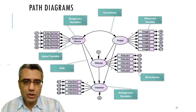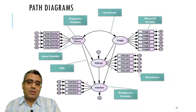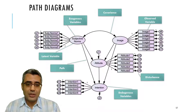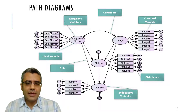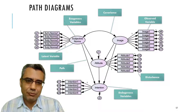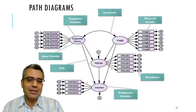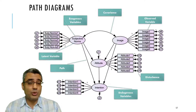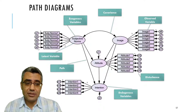We also have small round shapes called disturbance or error terms. As I mentioned with reflective constructs, the construct cannot explain 100% of the variance of one question. For example, if subjective norms explains 80% of the variance of question one measuring subjective norms, what about the remaining 20%? That unexplained variance is attributed to other factors we call error terms. None of the items are perfect — they have some measurement errors, and we represent those with these error terms.